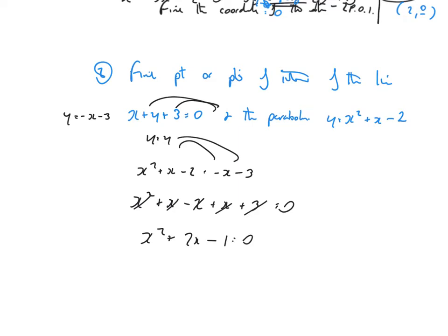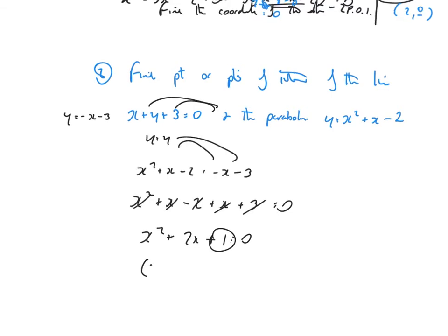Two numbers that multiply to give 1 and add to give 2 — that's 1 and 1. So I can write that as (x plus 1) all squared equals 0, giving x equals minus 1.